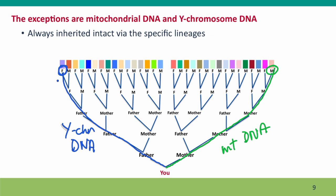When I talked about ancestry studies in Module 6, I emphasized that most of our genome is not inherited in this way — almost all the DNA we have is autosomal DNA that comes from many parents. But now you realize that even so, the coverage is very patchy. We have segments from some of these relatives and no segments from others.